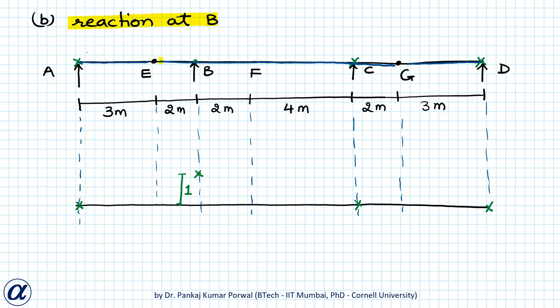For segment EBFCG, B goes up by unit magnitude and C remains where it originally was, so the entire segment displaces so that B has 1 unit vertical displacement and C has zero vertical displacement while remaining straight. Because at E we have an internal hinge, we can have different rotations for the two segments at E. Similarly, at G we also have an internal hinge, so we can have different rotations for the two segments connected at G.